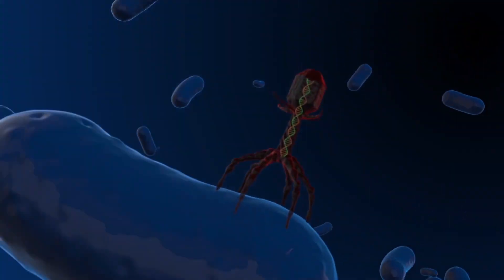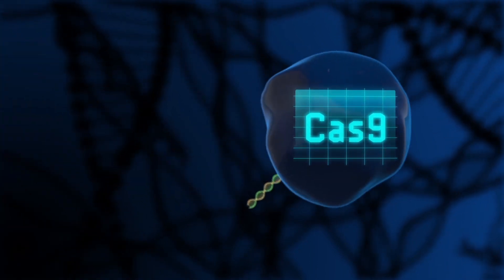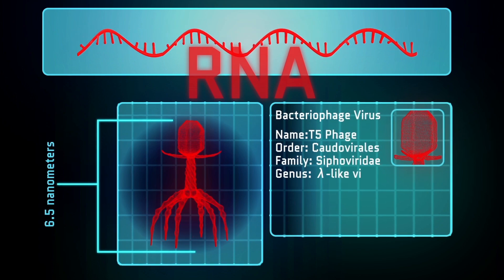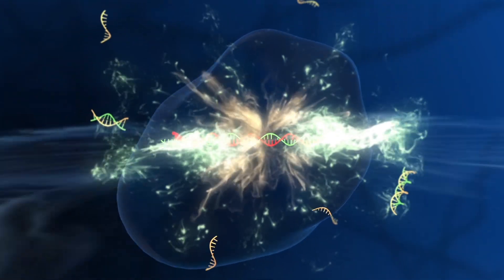When a virus invades a cell, proteins known as Cas9 spring into action. These Cas9 proteins contain little sequences of RNA, which are a kind of viral mugshot. When the RNA in the Cas9 matches up with the DNA in the virus, the Cas9 cuts and destroys that viral DNA.